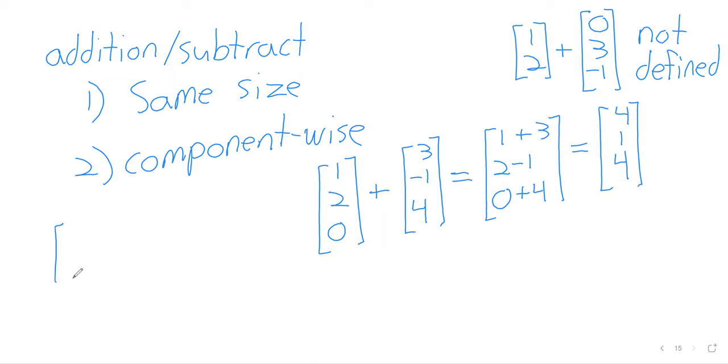And subtraction just in the same way. Like one, two, minus three, negative five. Let's be careful not to make college algebra errors here. One minus three is negative two. Two minus negative five is seven. So addition and subtraction, hopefully pretty straightforward.